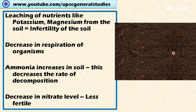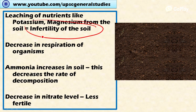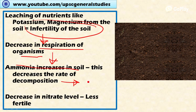Let's look at the impact of acid rain on soil health. Increased acidity of the soil leads to the leaching of nutrients like potassium and magnesium, resulting in soil infertility. This infertility decreases the respiration of organisms, because they do not get a sufficient nutrient source. The decrease in respiration leads to an increase in ammonia concentration in the soil, which decreases the rate of decomposition, resulting in a reduction in humus concentration.